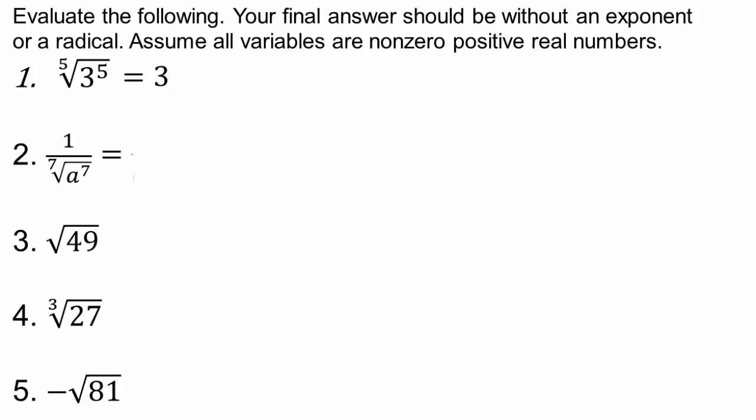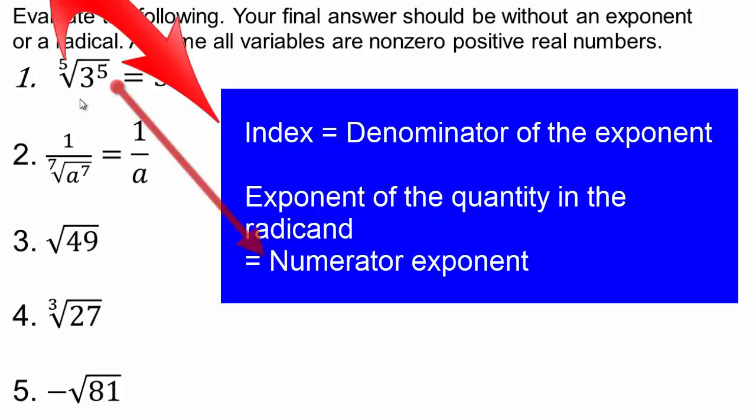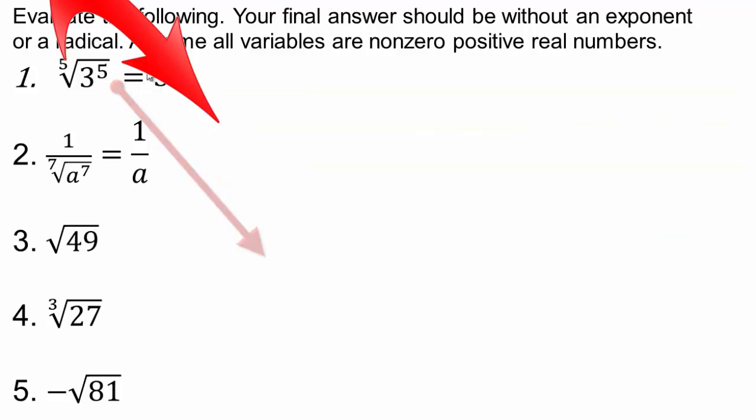Here you have seven over seven, or eight to the one. So again, notice the connection. When you're dealing with positive real numbers, when you have index and the exponent of the base on the inside match, you just end up with the variable, or the number. Because it's five fifths, seven sevenths, and so on.